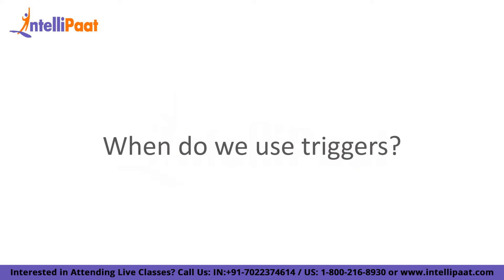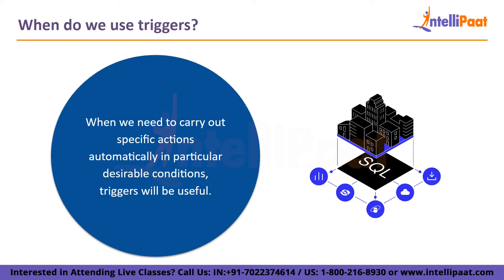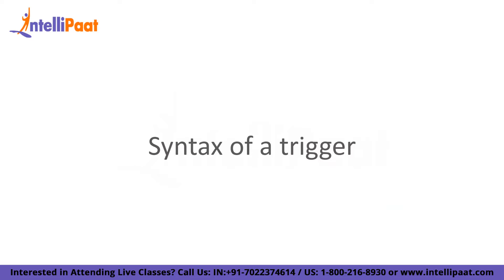When do we use triggers? When we need to carry out specific actions automatically in particular desirable conditions, triggers will be useful. For instance, we need to be aware of the frequency and timing of updates to a table that is continually changing. In such cases, we may design a trigger to insert the required data into a different table if the primary table underwent any changes.